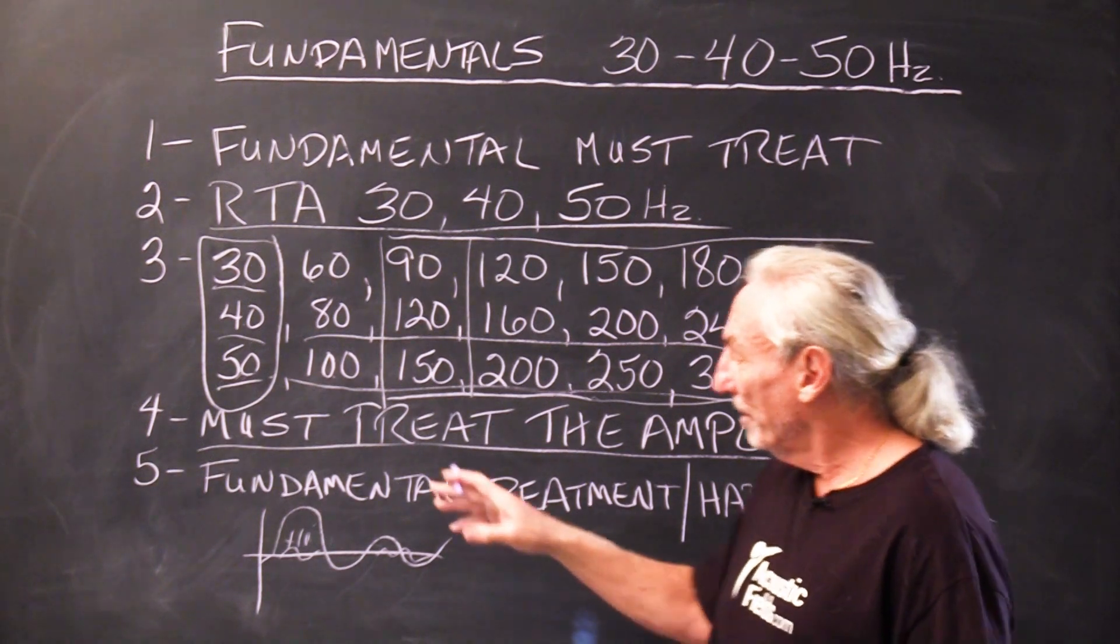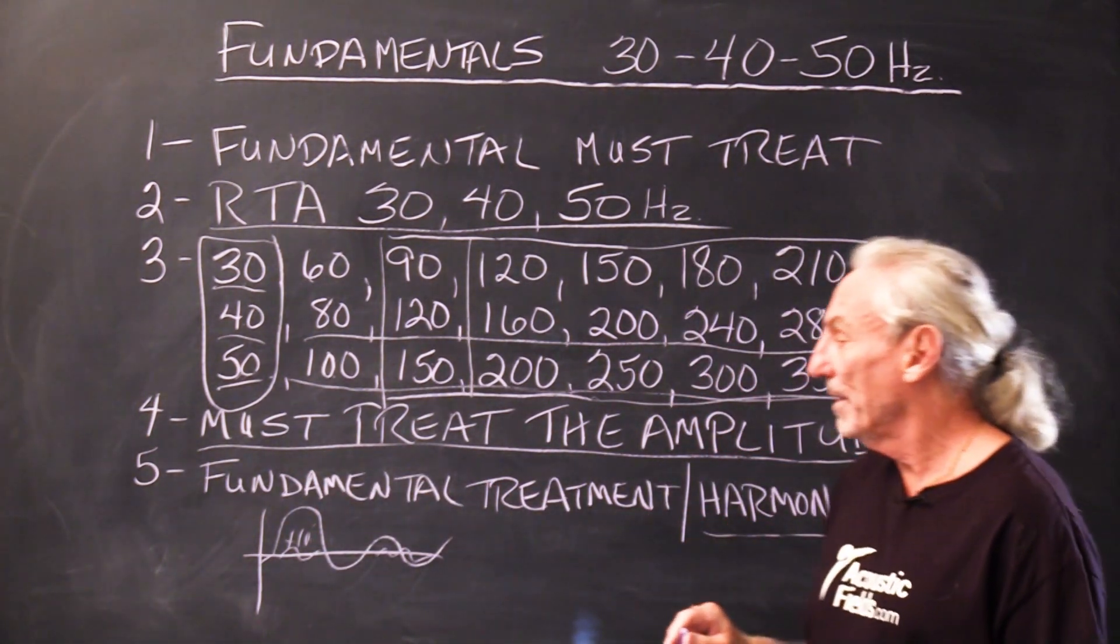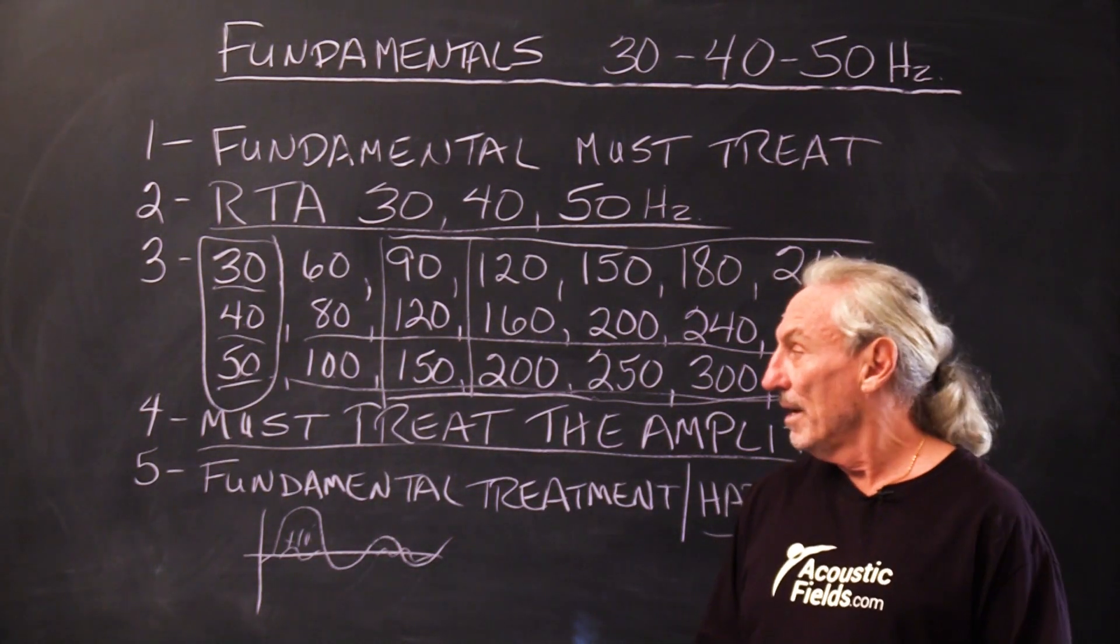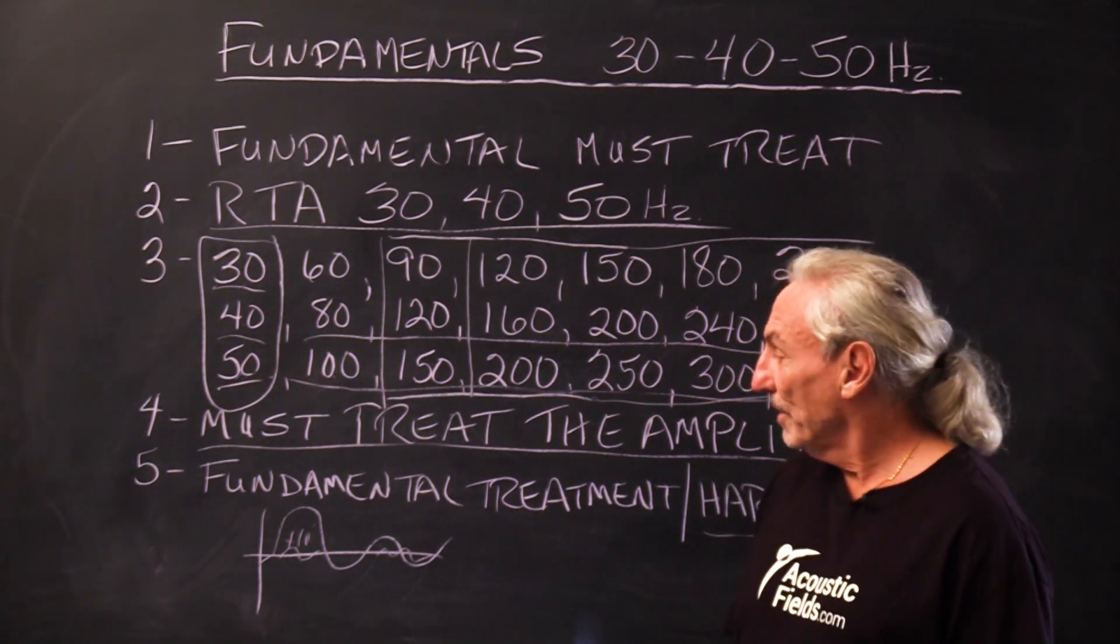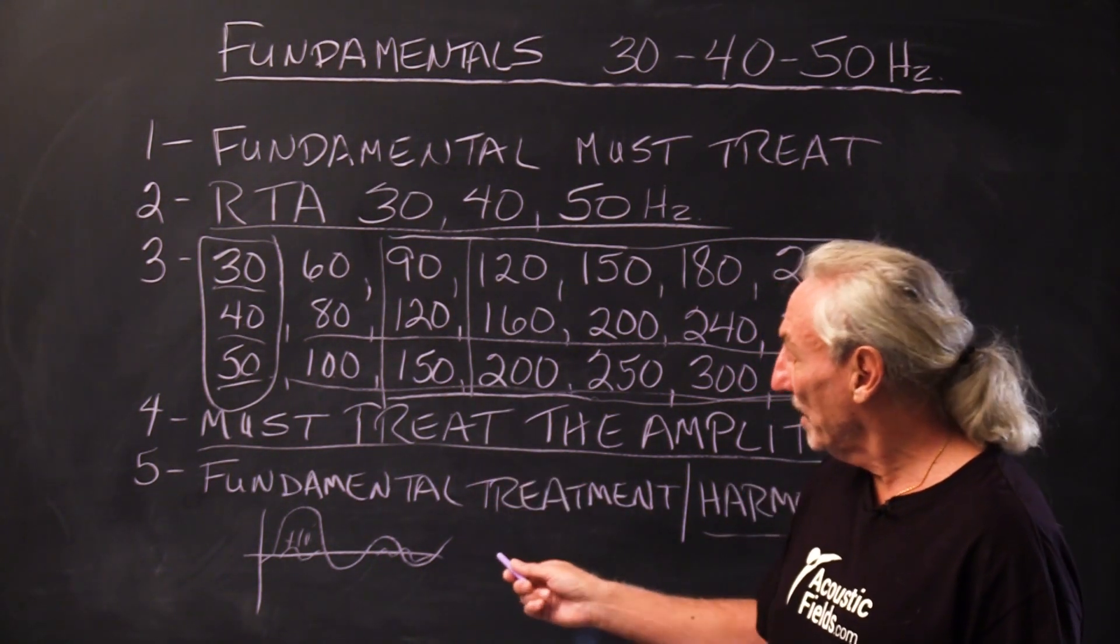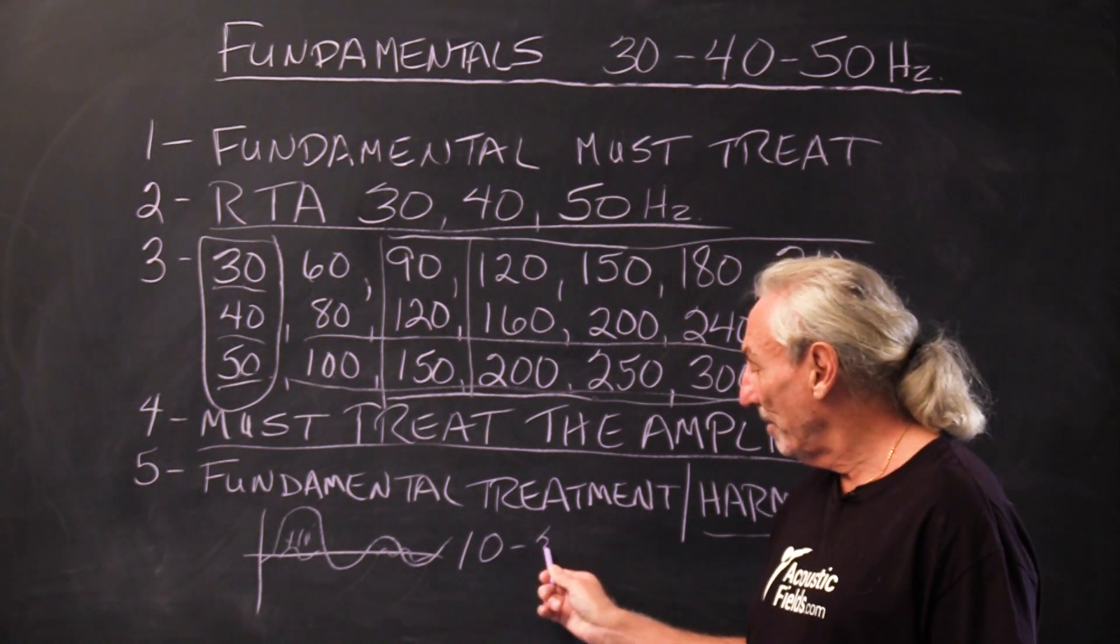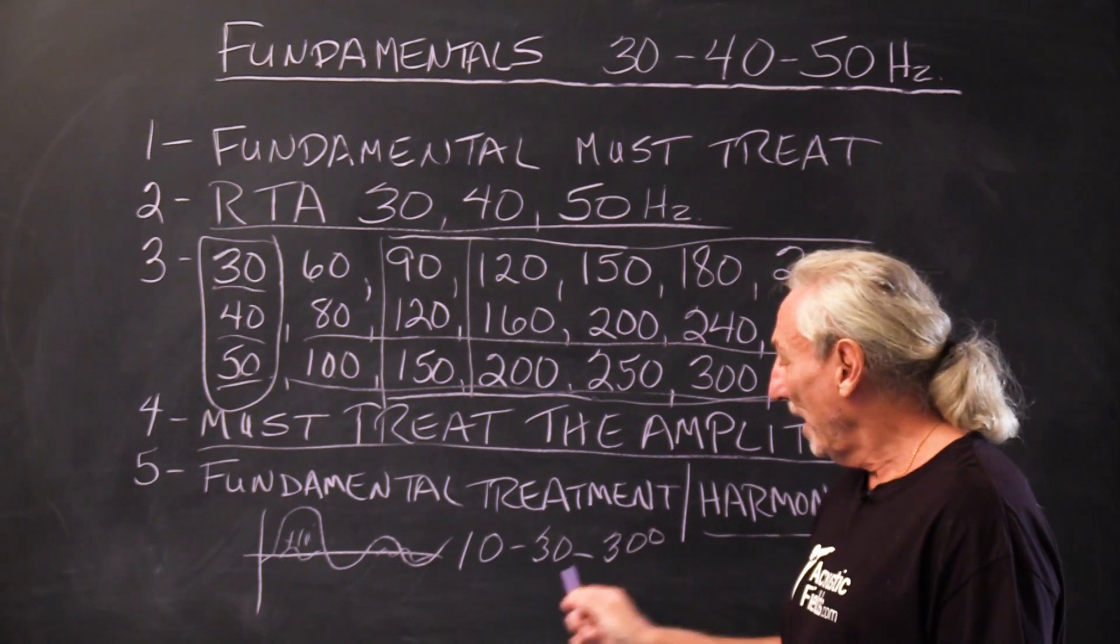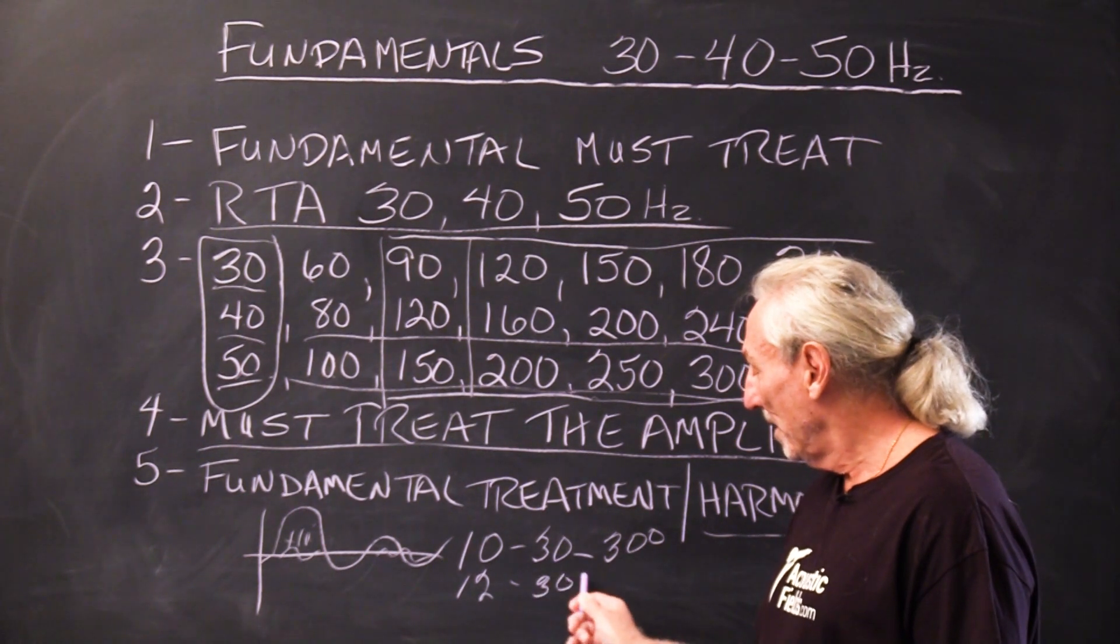So the fundamental treatment has a big harmonic benefit, and you have to realize that in your small rooms. And that's why I created the diaphragmatic absorption with the carbon technology. We have two frequency ranges in that. The ACDA-10 is broadband from 30 to 300, and the ACDA-12 is 30 to 50.